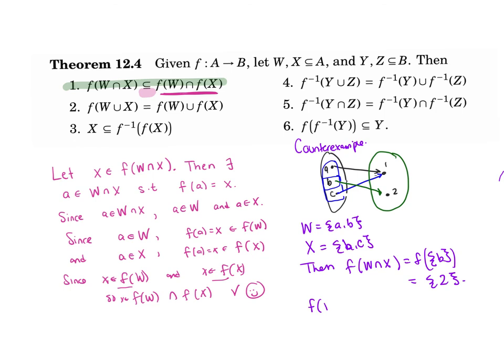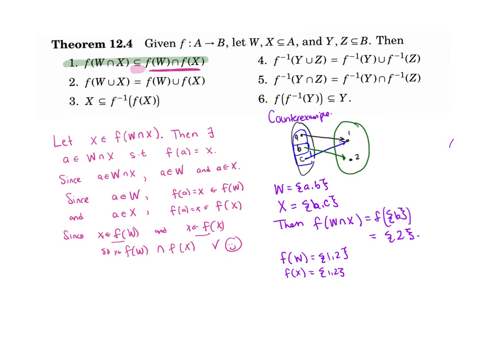My f(W) is equal to, W was {A, B}, those together get mapped to {1, 2}. f(X), that was {B, C}, those together get mapped to {1, 2}. So f(W) ∩ f(X) = {1, 2}. So we can see that f(W ∩ X) is not equal to f(W) ∩ f(X). So it is true that we get the subset, as we proved over here, but it's not true that those two sets are equal.